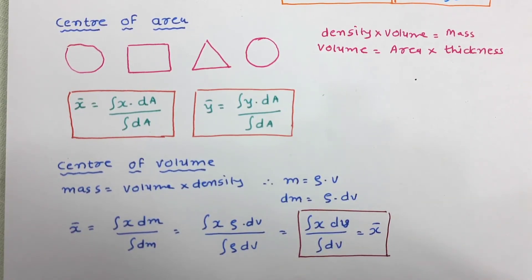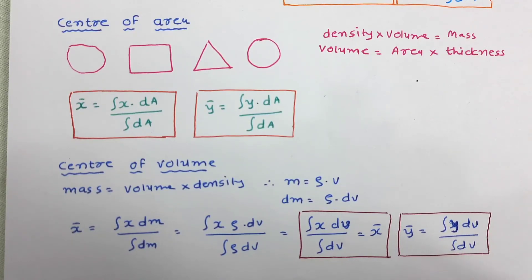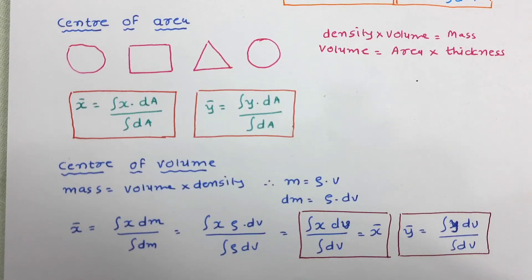Similarly, we can write the equation for ȳ: ȳ is equal to integration of y dv divided by integration of dv. These formulas can be used to determine the center of volume, center of mass, and center of area. Thanks for watching this video. If you have any doubt or query, please write in the comment box — I will be there to help you.